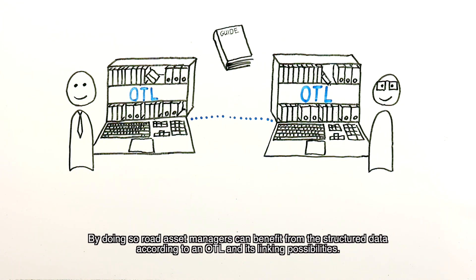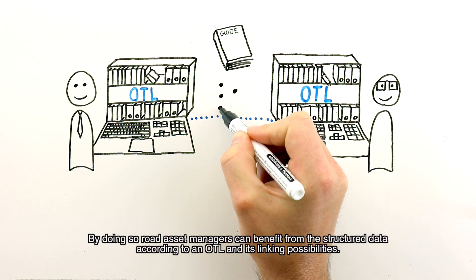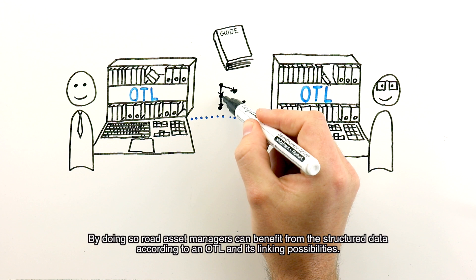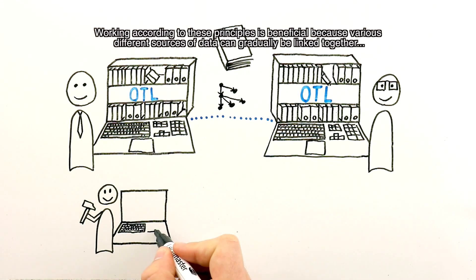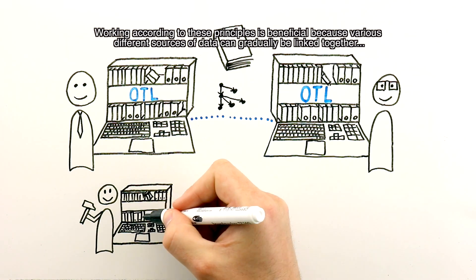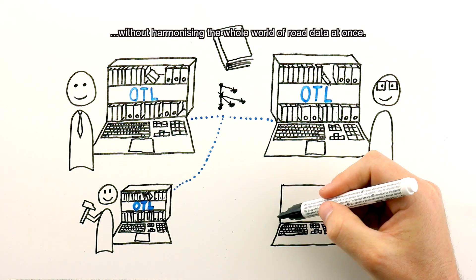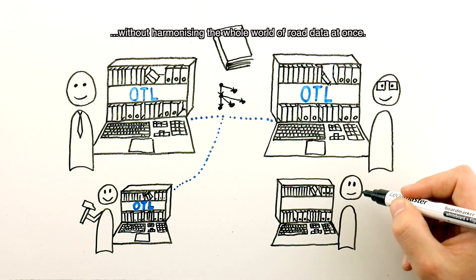By doing so, road asset managers can benefit from the structured data according to an OTL and its linking possibilities. Working according to these principles is beneficial because various different sources of data can gradually be linked together without harmonizing the whole world of road data at once.